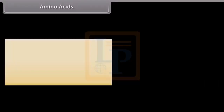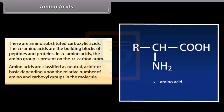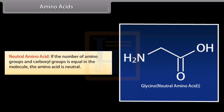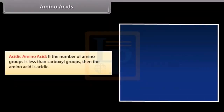Amino acids are amino-substituted carboxylic acids. The alpha amino acids are the building blocks of peptides and proteins; in alpha amino acids, the amino group is present on the alpha carbon atom. Amino acids are classified as neutral, acidic, or basic depending upon the relative number of amino and carboxyl groups in the molecule. If the number of amino groups and carboxyl groups is equal, the amino acid is neutral — for example, glycine. If the number of amino groups is more than carboxyl groups, the amino acid is basic — for example, lysine. If the number of amino groups is less than carboxyl groups, the amino acid is acidic — for example, aspartate.